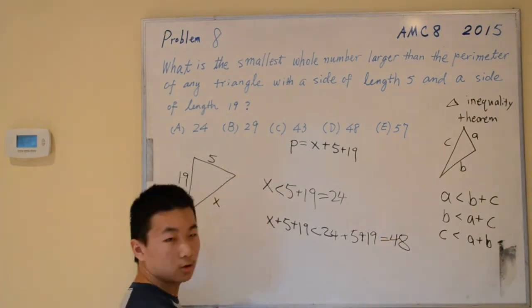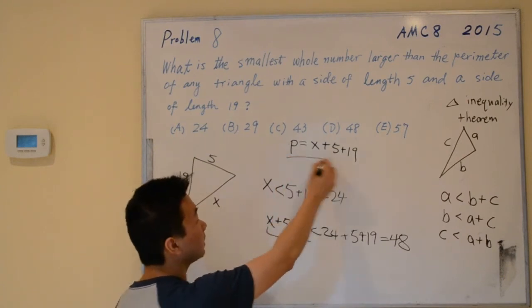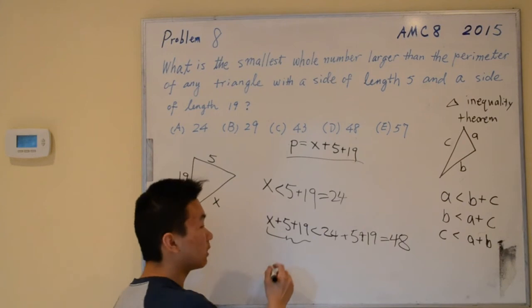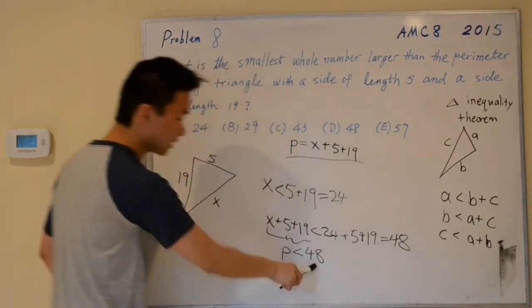We notice that this right here is the same as p, so let's replace that with p, which is the perimeter. So the perimeter is less than 48.